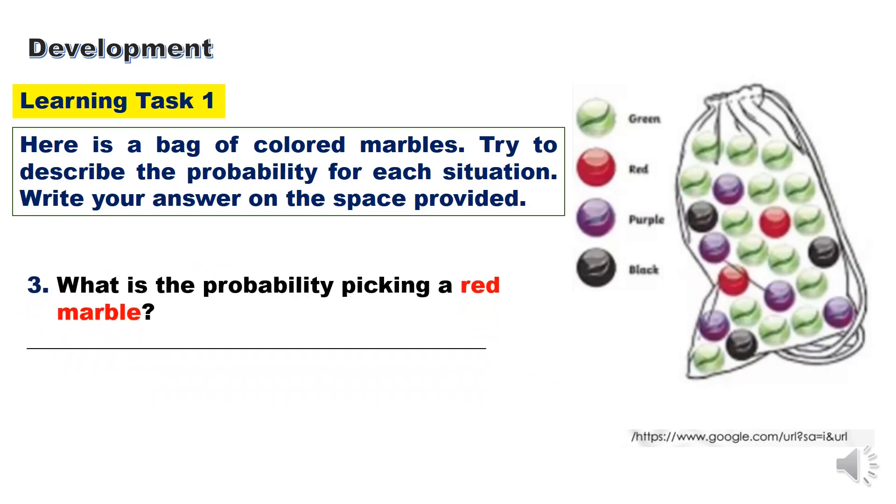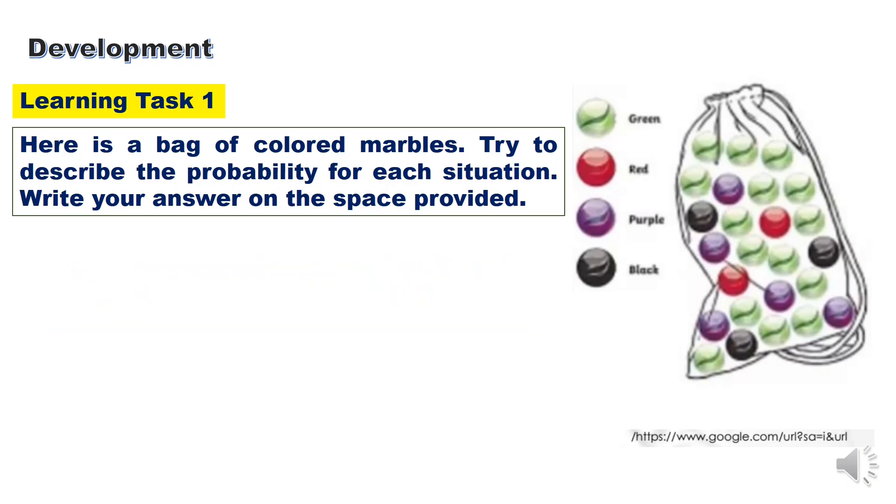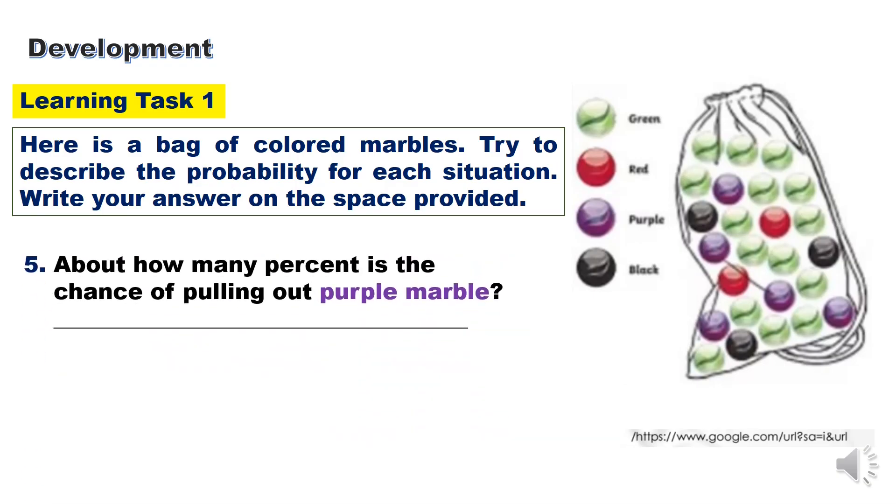How about number 3: What is the probability of picking a red marble? Number 4: Is there an equal chance of pulling out green and black marble? Why? And number 5: About how many percent is the chance of pulling out purple marble?